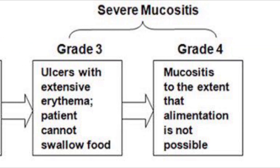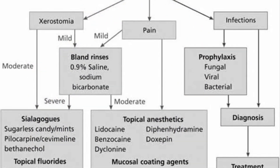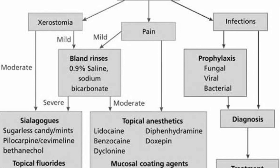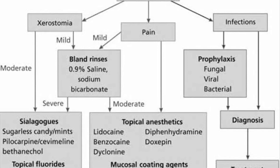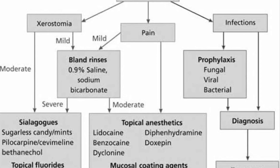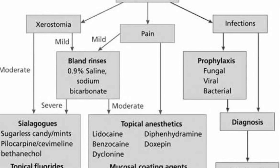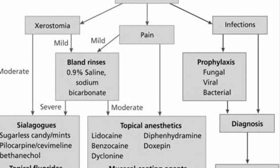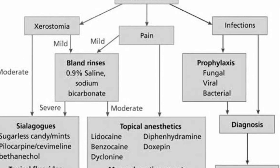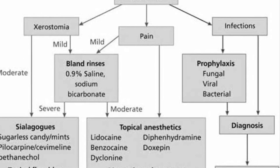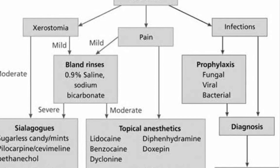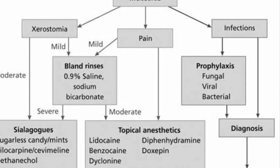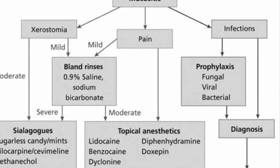Management of mucositis: First, management of pain by local, topical, or systemic analgesia. Second, nutritional support — give soft or liquid diet according to the degree of mucositis. Third, oral hygiene or oral decontamination — sometimes antibiotic and antiseptic gargles are given to manage oral hygiene. Fourth, palliation of dry mouth.